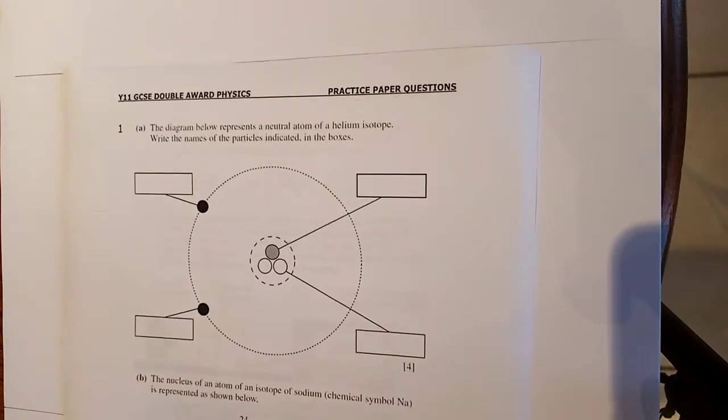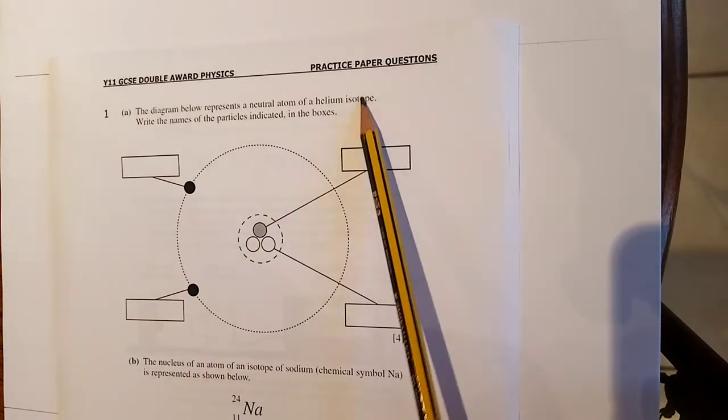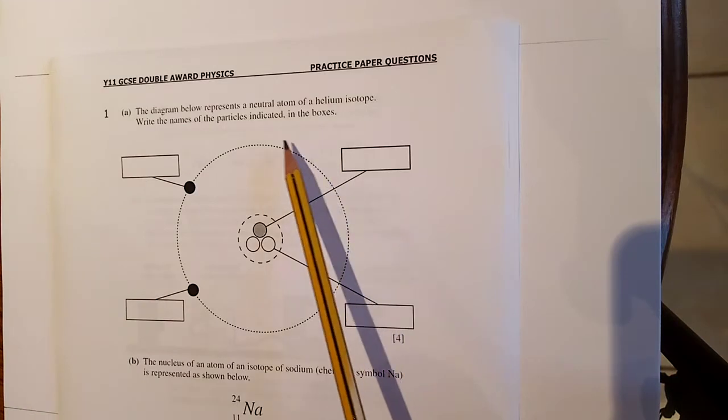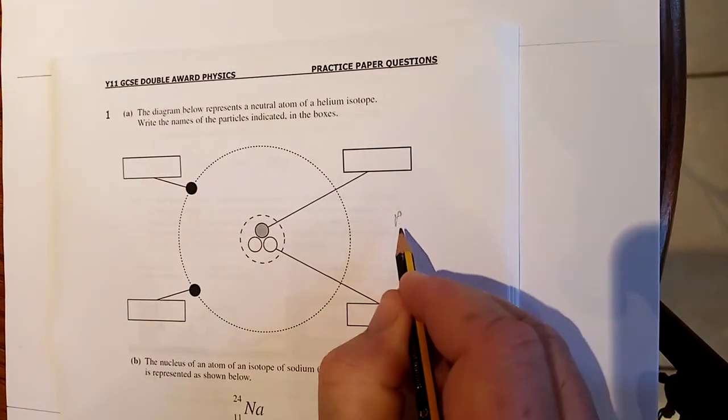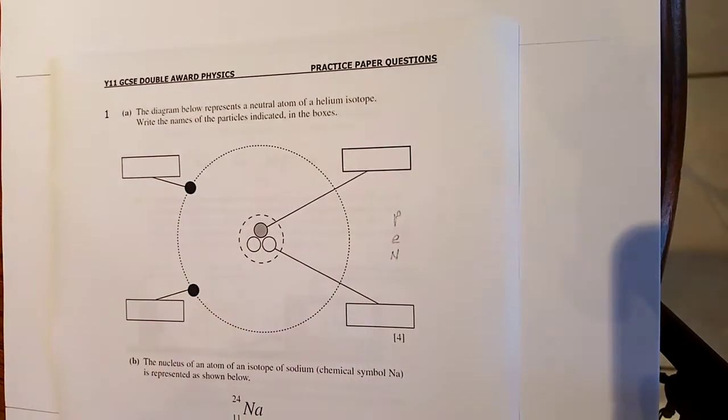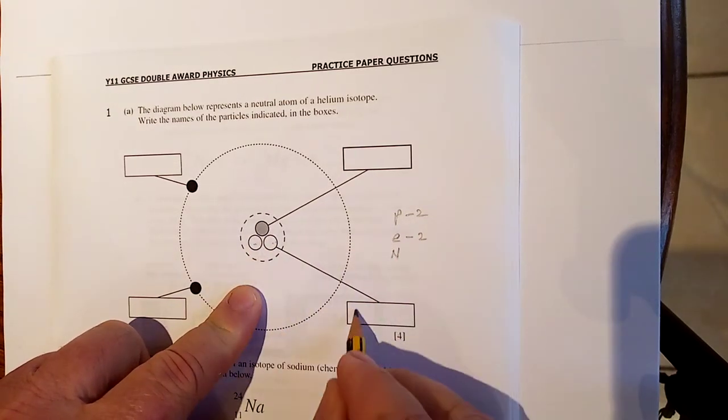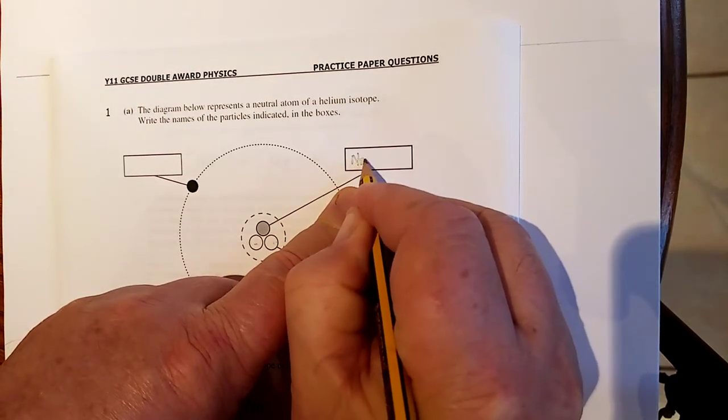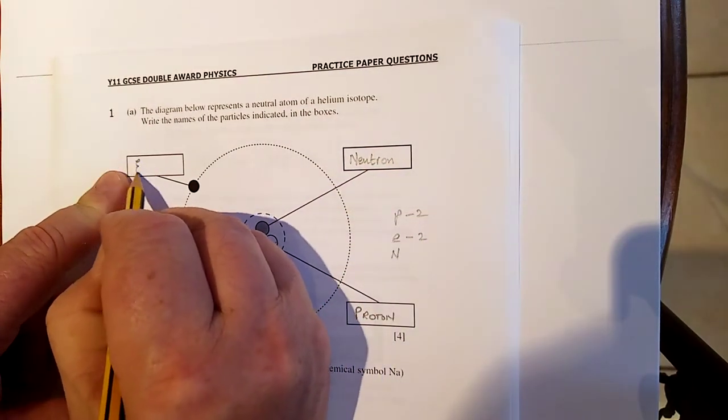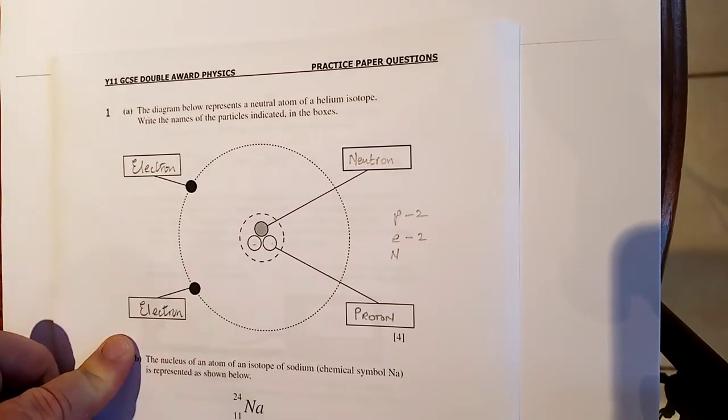So here we have the first one about the configuration of an atom. The diagram below represents a neutral atom, same number of protons as electrons, of a helium isotope. Write the names of the particles indicated in the boxes. So there's a trick we prefer here, and the trick is to count the electrons first. Because remember, P, E, N. There are two electrons, so there must be two protons. So these boys here are the protons.